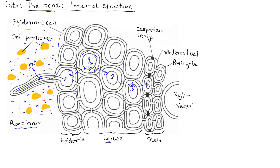The endodermis facilitates the movement of water and mineral salts into the xylem. The Casparian strip — that waxy band of material — facilitates the movement of water into the xylem. One way in which the endodermis does this is through pumping of salts: salts are actively pumped into the xylem, thereby raising the osmotic pressure in the xylem. With a high osmotic pressure, water from the endodermis will then flow and move into the xylem by osmosis.